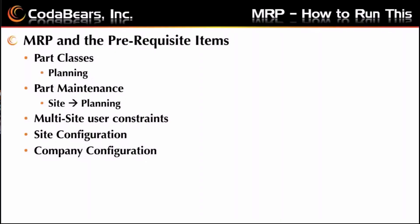The first things we need to look at when running MRP is: what are our part classes and what is on the planning class? Without that, we're not necessarily looking at all of the information. On the planning tab in the part class, there are a few settings regarding how production planning works for all parts within a class. Anything maintained on the part class can also be maintained on the part itself, but on the part you'd have to do it one by one. If you keep it on the class, you're doing it for all parts within the class.